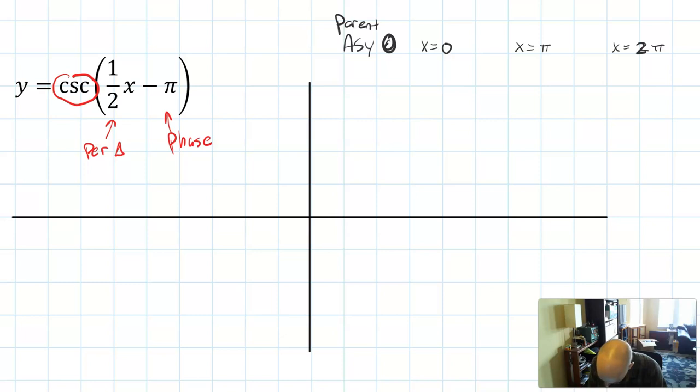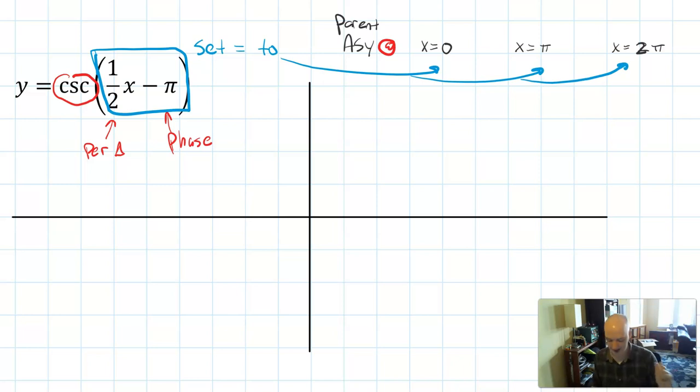If I write down where the asymptotes of the parent are happening at—zero, π, and 2π—what you can do is set the argument equal to these three values and solve. So I'm going to do that here.